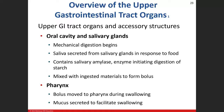Let's start at the beginning and work our way from the mouth down to the stomach. The upper GI tract runs from the mouth through the pharynx, esophagus, stomach, and duodenum — the first part of the small intestine. We'll also include accessory structures like the teeth.